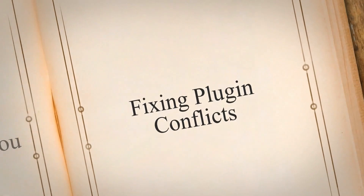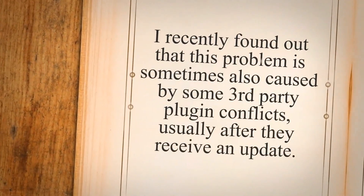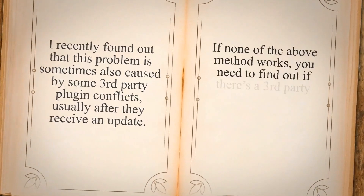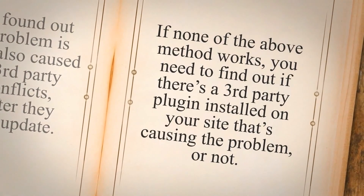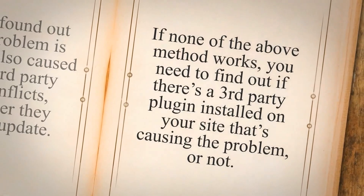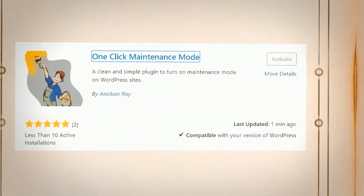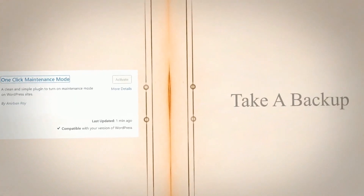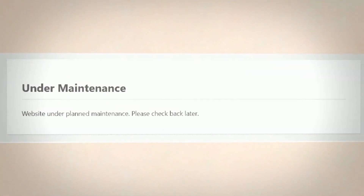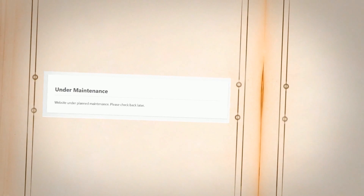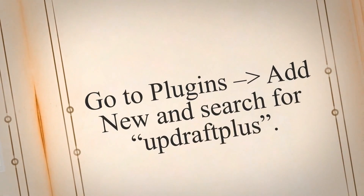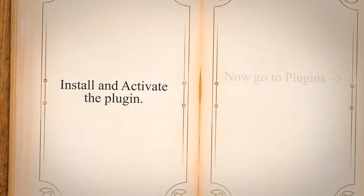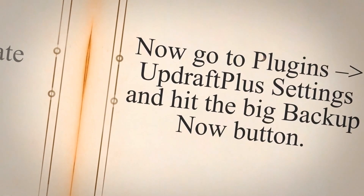Fixing plugin conflicts. This problem is sometimes also caused by third-party plugin conflicts, usually after they receive an update. If none of the above methods work, you need to find out if there's a third-party plugin causing the problem. Make sure you do this at the time of day when your site receives the least amount of traffic. Take a backup — if your host natively supports daily automatic backups, you can skip this step. Otherwise, go to Plugins > Add New, search for UpdraftPlus, install and activate the plugin, then go to Plugins > UpdraftPlus Settings and hit the big Backup Now button.